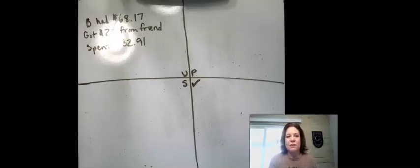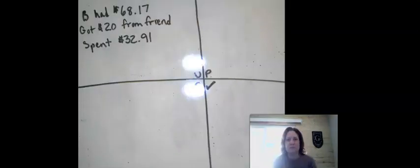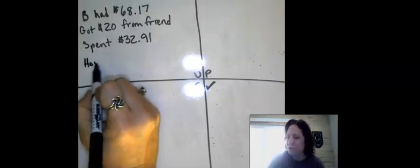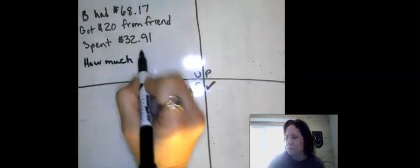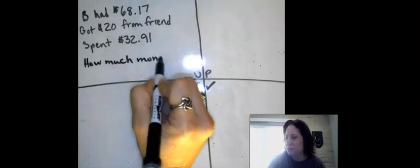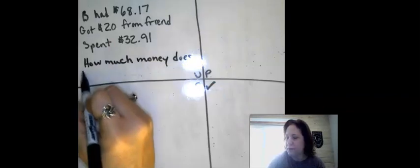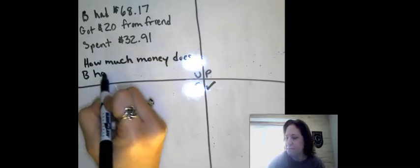All right, so what do we know? Well, we know that Barry had $68.17 and he got $20 from a friend and he spent $32.91. The question is how much money does Barry have now?